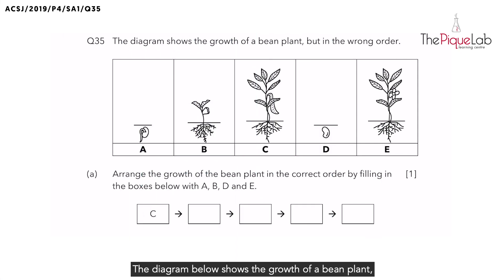The diagram below shows the growth of a bean plant but it is arranged in the wrong order. So what are we required to do? We are required to arrange the growth of the bean plant in the correct order by filling in the boxes below with A, B, D, E, and in the first box we have C.